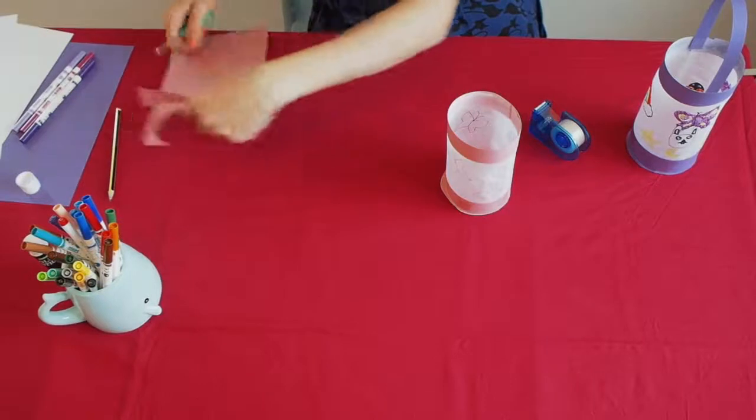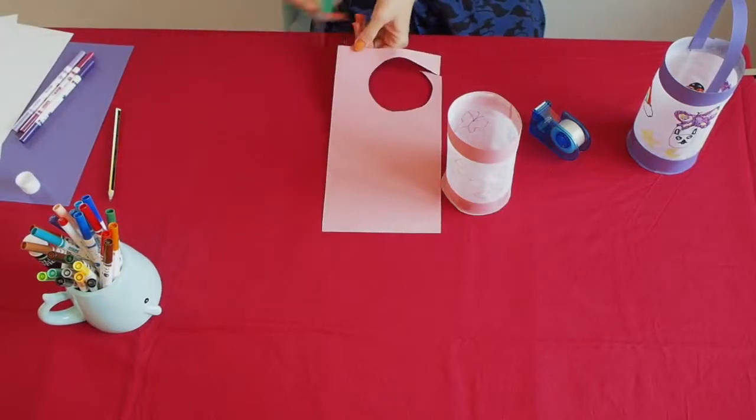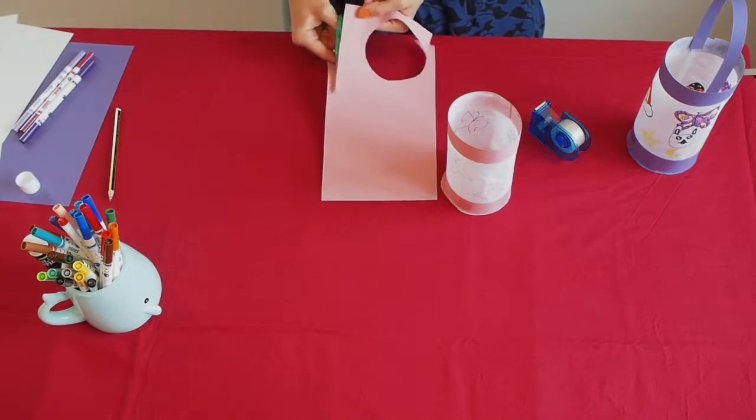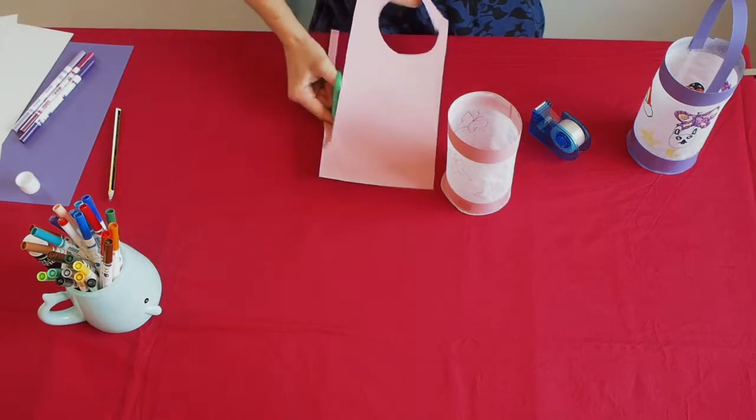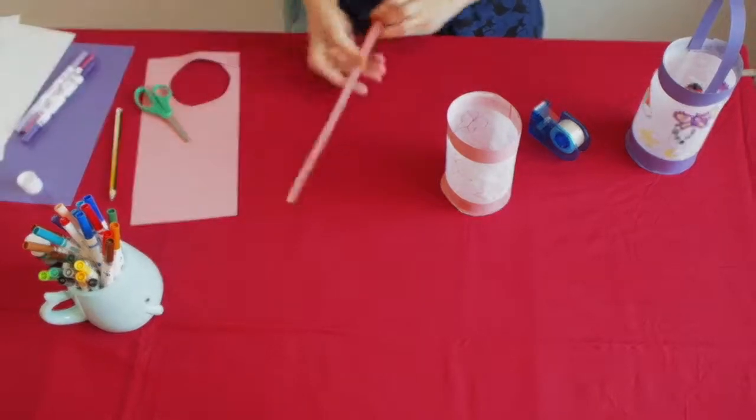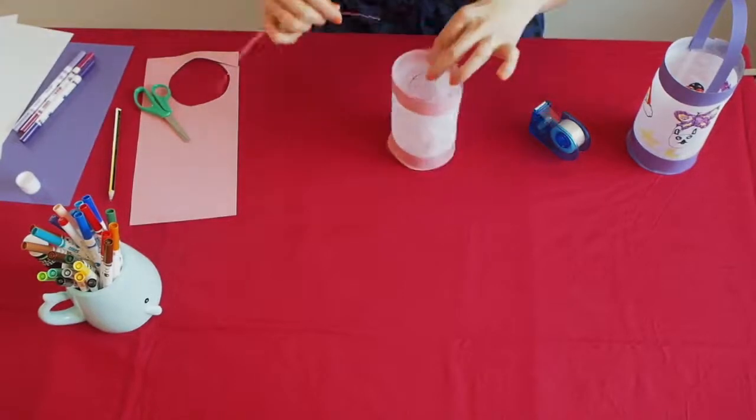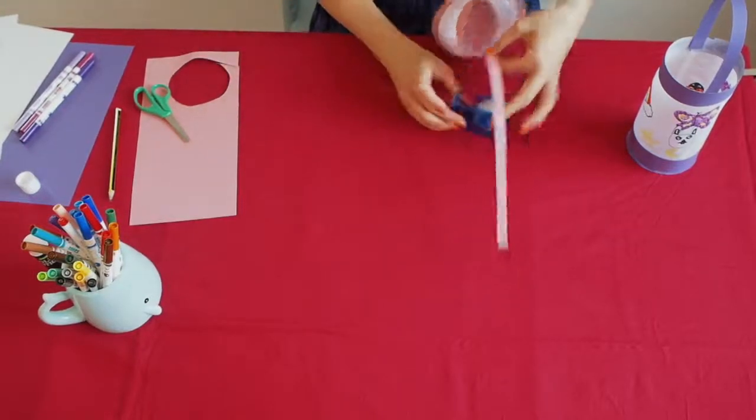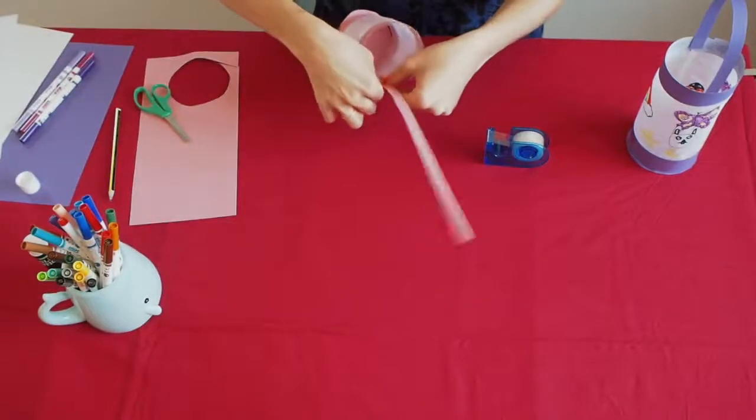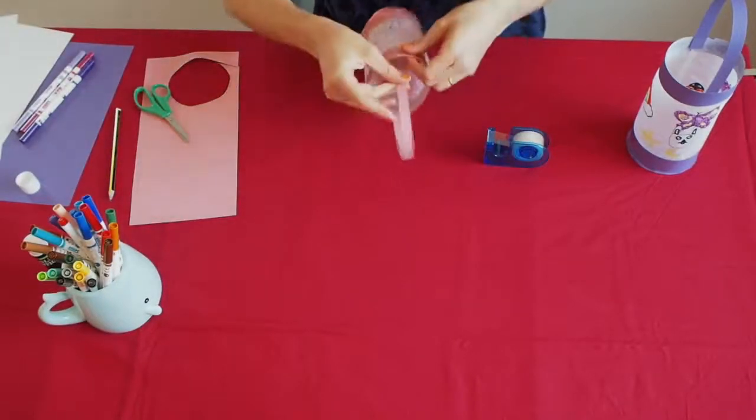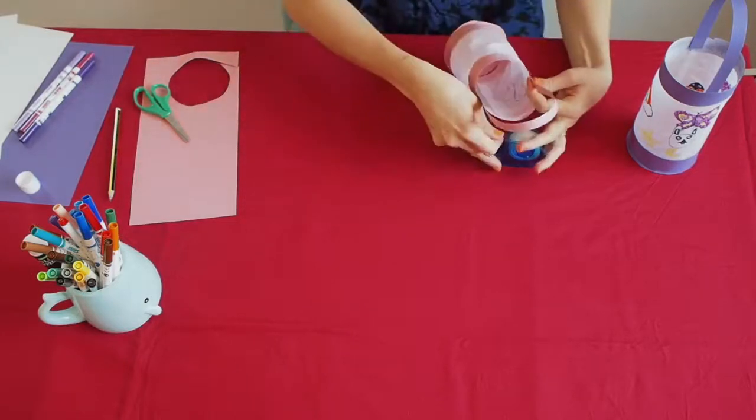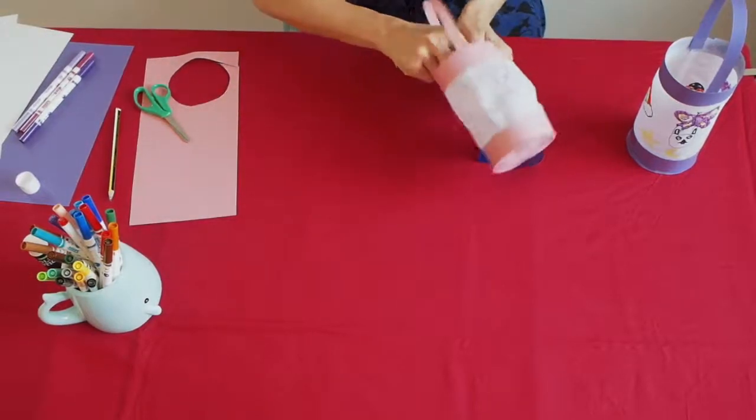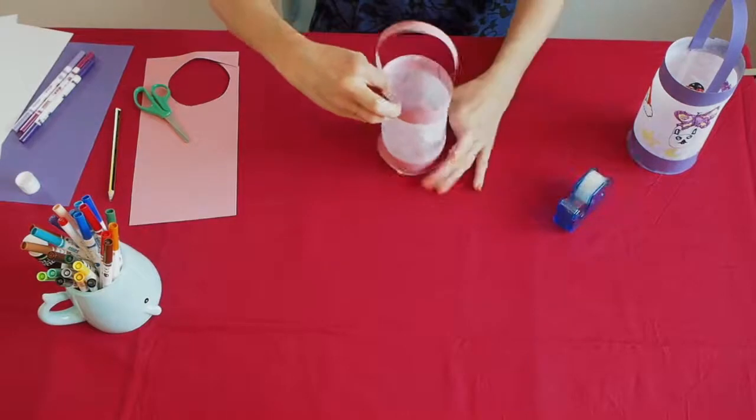Now, we're going to take our paper back again. We cut a thin strip. And we're going to take our paper lantern. And we'll stick it inside. So, on one side. And on the other one. There we go.